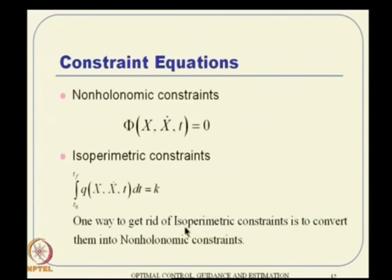There is another class of constraints that pops up in many application problems: non-holonomic constraints. This non-holonomic constraint appears in the form of a state equation. There is also another class called isoperimetric constraints, which is different.